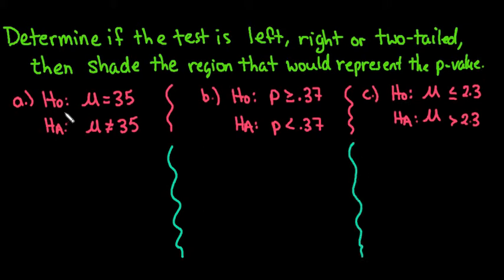Starting with the first one, the null hypothesis is that the population mean μ equals 35. We always use μ for the population mean. The alternative is that μ is not equal to 35. Since both of these are tests for the mean,